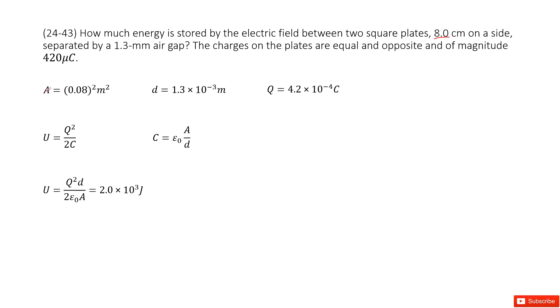The cross-sectional area is A, that is the side length squared. So we write it there. And they also tell you the air gap thickness is 1.3 mm, so we write it there as d.